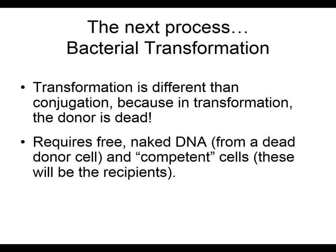The next process that can create recombinant bacterial cells is called transformation. In conjugation, both cells were alive and there was a pilus that formed between them, allowing DNA to travel across. In transformation, the donor cell has to be dead. The DNA from that cell is released into the environment as either a fully circular molecule or a fragment of a bacterial chromosome — we call that the free, naked DNA.